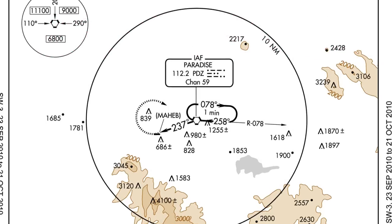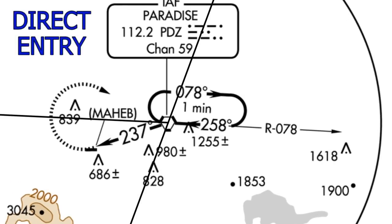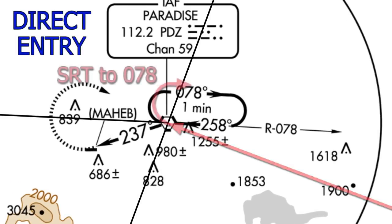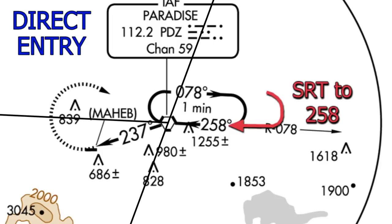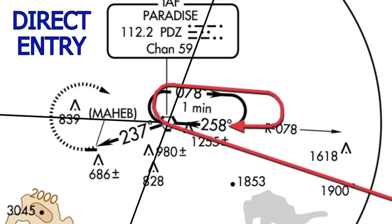Now that we know how to find which entries we need to do, let's talk about how to fly them. For the direct entry, we fly to the Paradise VOR — the IAF — and do a standard rate turn to the right until on a heading of 078. We start a timer and fly one minute on the outbound leg, then do another standard rate turn to the right. As we come out on a heading of 258 to the Paradise VOR, we won't always be perfectly lined up due to varying approach directions and wind, but we will quickly align ourselves. By the time we overfly the Paradise VOR for the second time, we'll be on a heading of 258 and ready to continue the approach.